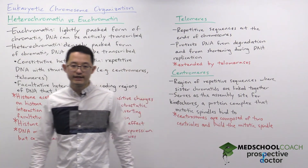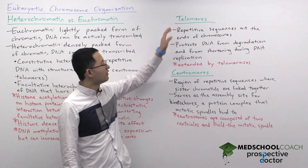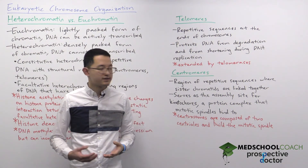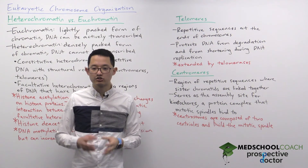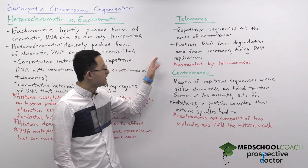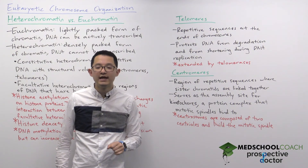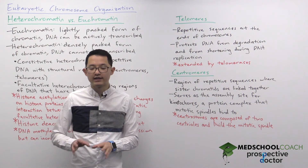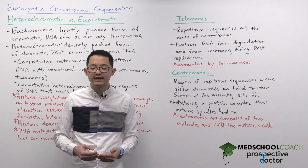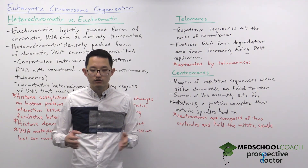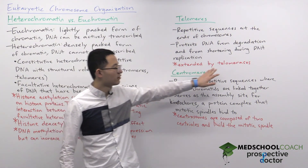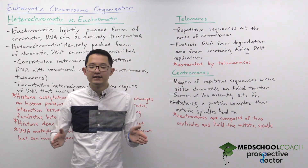Now let's talk about telomeres and centromeres. Telomeres are repetitive sequences at the ends of chromosomes and are constitutive heterochromatin with a structural role. They protect the ends of DNA from degradation and prevent DNA from shortening during replication. There is an end replication problem where the ends of the DNA cannot be fully replicated in the lagging strand, so telomeres would normally shorten — but this is prevented by telomerase enzymes that extend the telomere sequence.